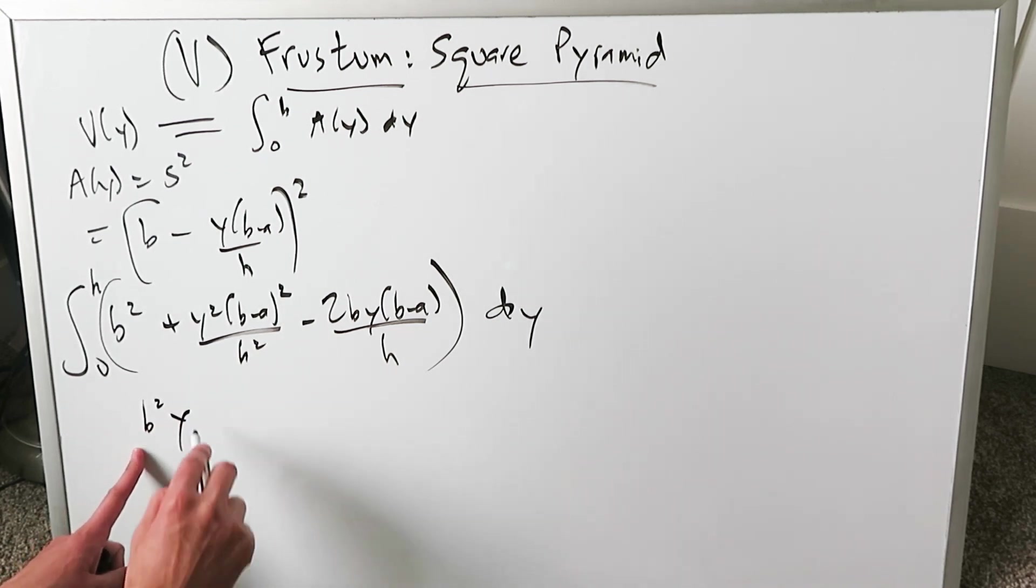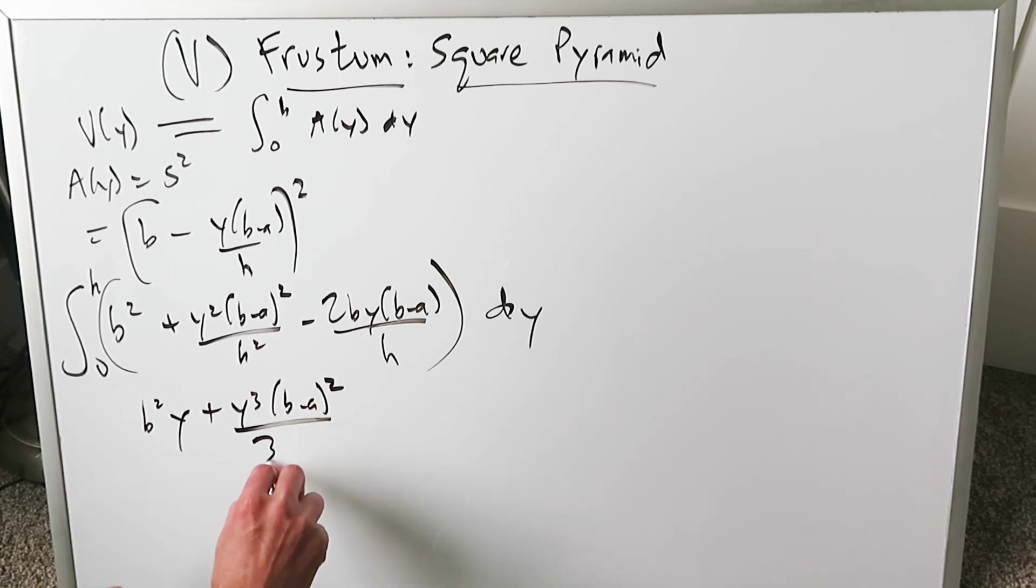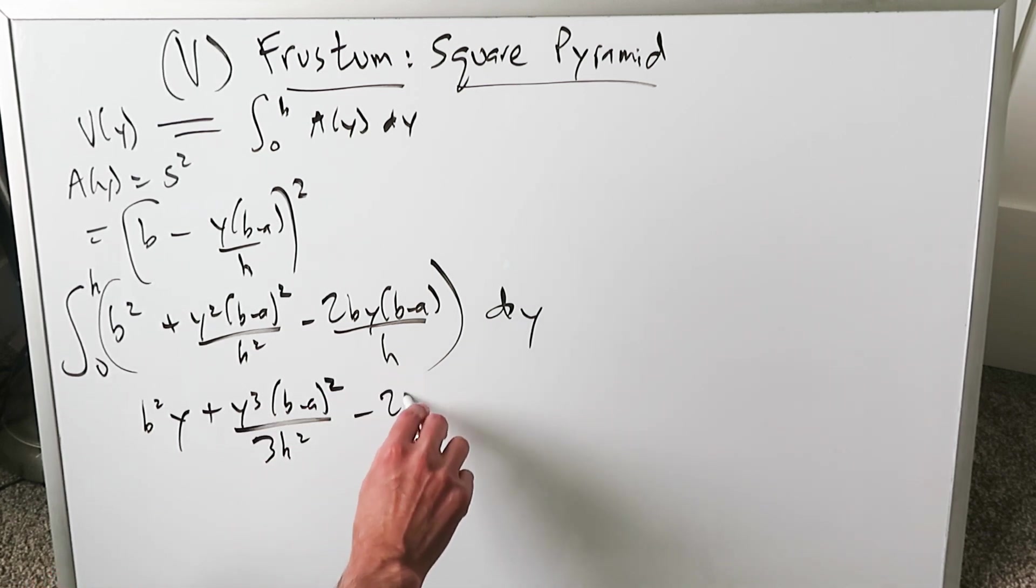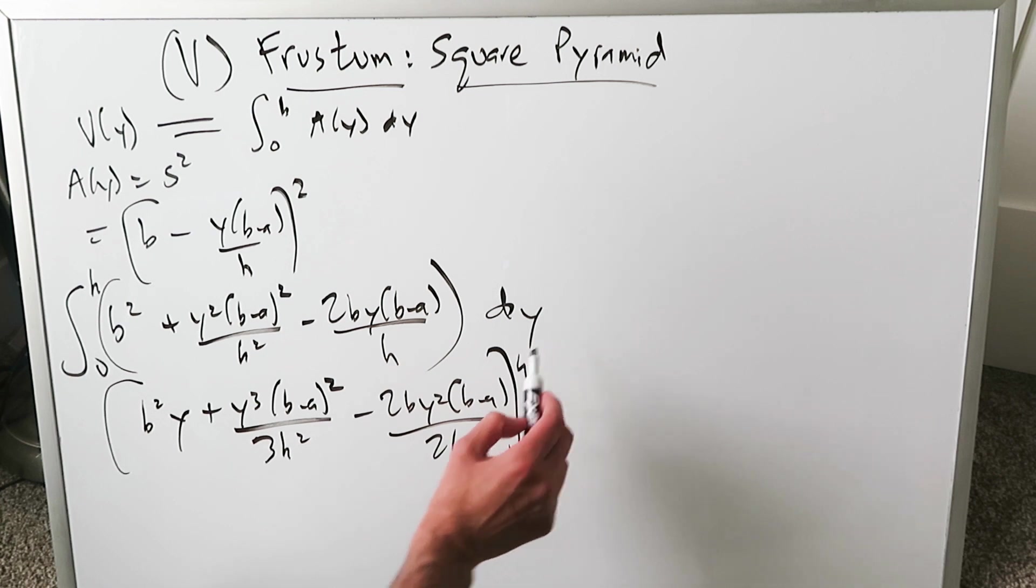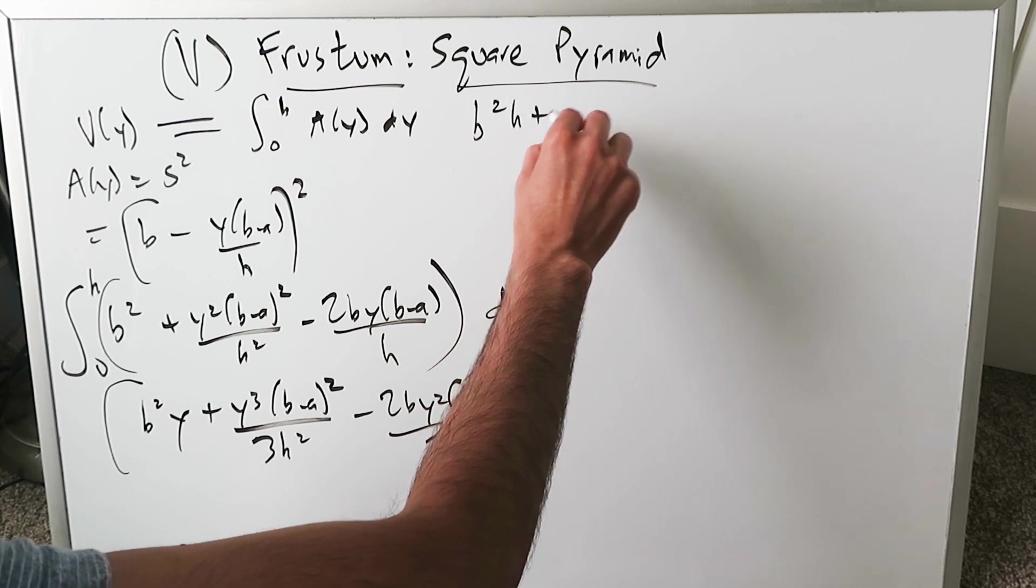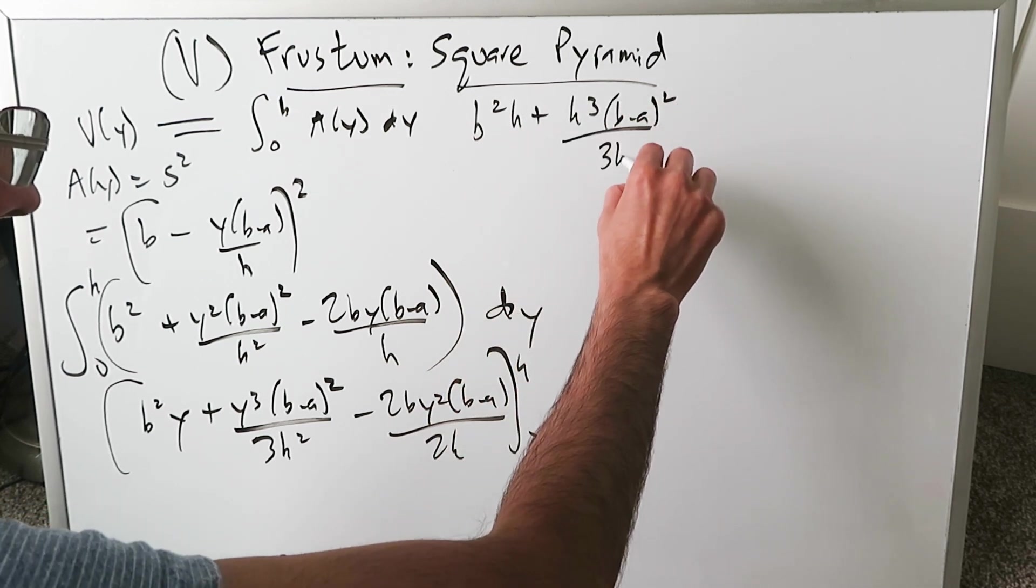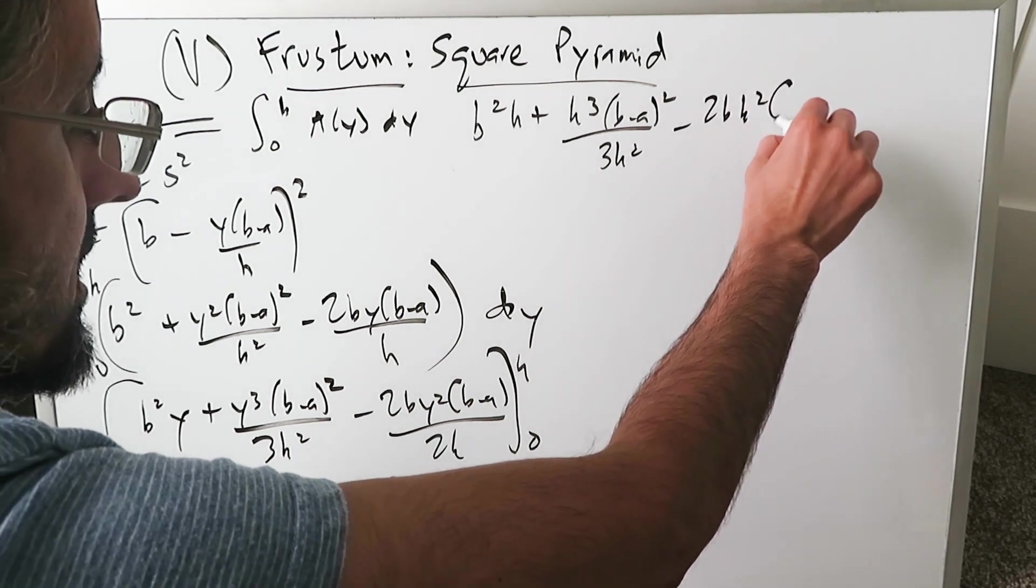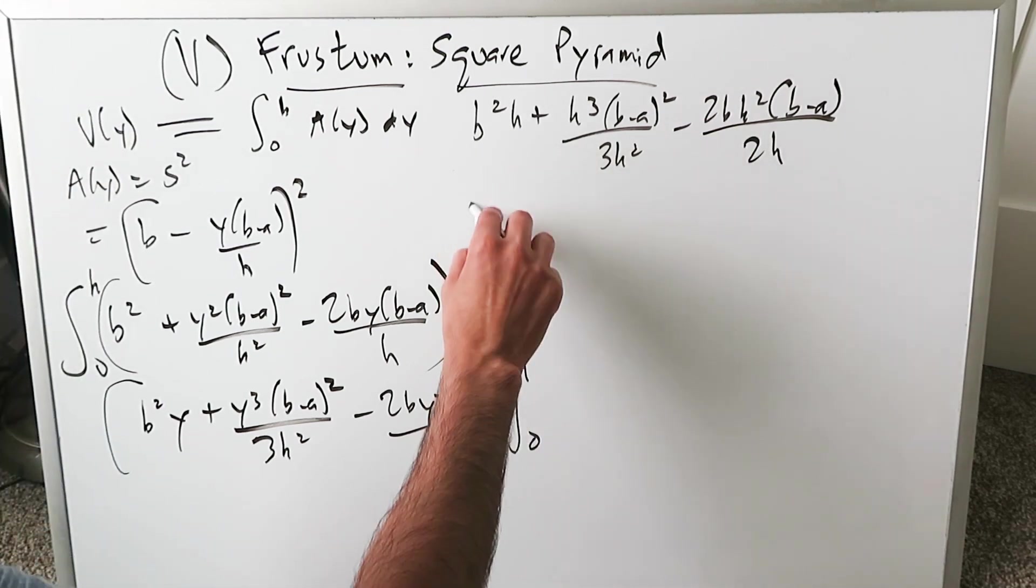We have to integrate this. Bring in the Y: B squared Y plus Y cubed B minus A whole squared over 3H squared minus 2BY squared B minus A over 2H. We have an upper limit H. Bring the H upper limit into places of Y: B squared H plus H cubed B minus A whole squared over 3H squared minus 2BH squared B minus A divided by 2H.